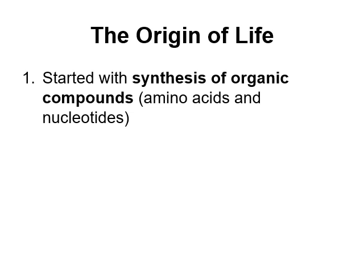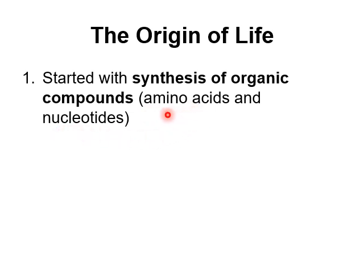Let's talk about how those first microbes might have formed. There are four crucial steps that had to take place. The first is that organic compounds had to form spontaneously — things like amino acids, nucleotides, simple sugars, and lipids, which we discussed back in chapter three. Those had to form and then be bound to each other to make polymers, which is the next step of this process.